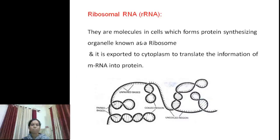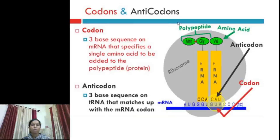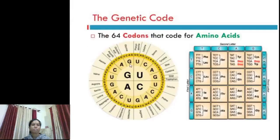Ribosomal RNA is itself part of the ribosome and helps in protein synthesis. It has some coiled regions and some uncoiled regions; in the coiled region, there is base pairing in nitrogen bases. Codons are the three-base sequences on mRNA that specify a single amino acid. Anticodon is the three-base sequence on tRNA that matches with the mRNA codon. There are 64 codons that code for amino acids, and these codons are present on mRNA.